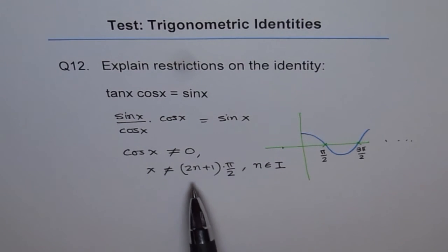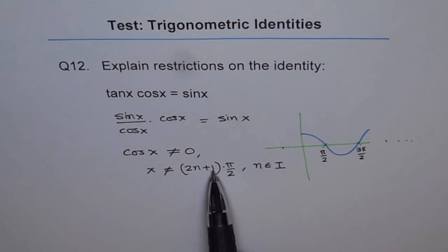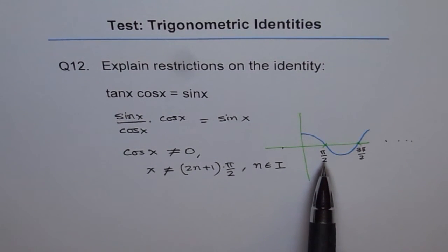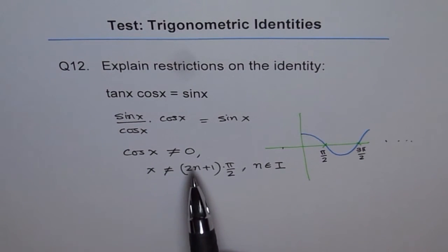So that gives an odd number. 2 times n will be even and plus 1 will make it odd. So these are odd multiples of pi by 2, which are not permitted for this particular identity.